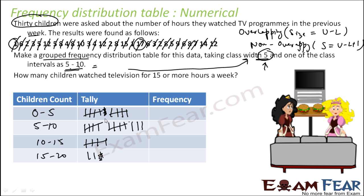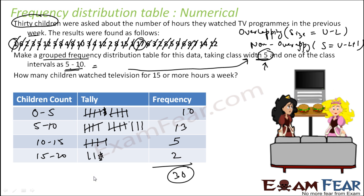So let's see the values. The first class 0 to 5 has 10. The second class 5 to 10 has 13. The third class 10 to 15 has 5. And the last class 15 to 20 has 2. We add these: 10 + 13 + 5 + 2 = 30. Since there were 30 children, we have all 30 data points accounted for. This is our grouped frequency distribution for this data.